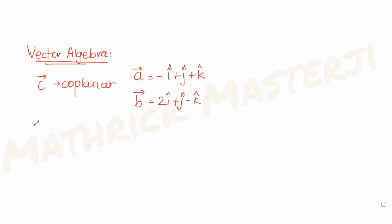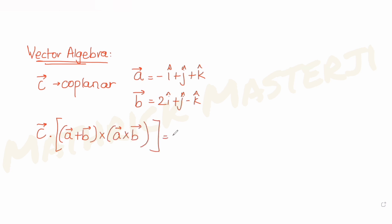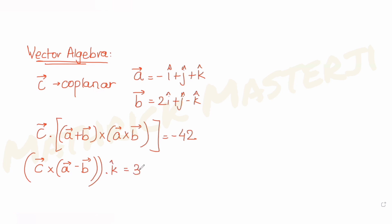The question also says let vector c satisfy two conditions. The first condition is the dot product of c with the quantity (a+b) cross (a×b) equals minus 42. The second condition is the dot product of (c cross (a minus b)) with k-cap equals 3.